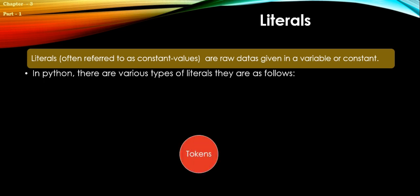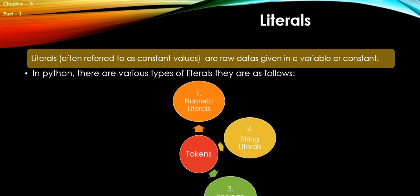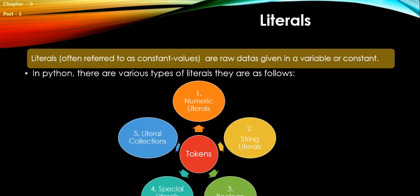Number one: Numeric literals. Number two: String literals. Number three: Boolean literals. Number four: Special literals like None. And number five: Literal collections.